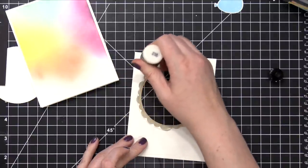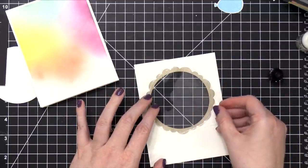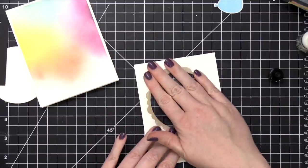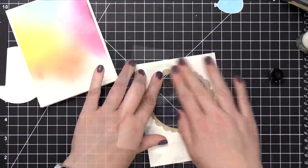I'll add some Ranger Multi Medium Matte Adhesive, and then press that acetate or window plastic down onto the frame. This is the main surface area of my shaker card.